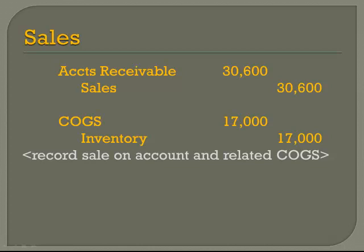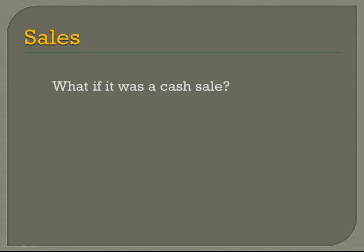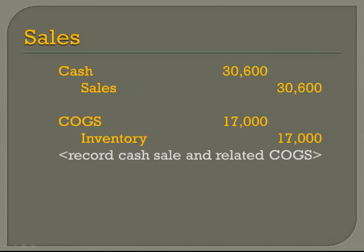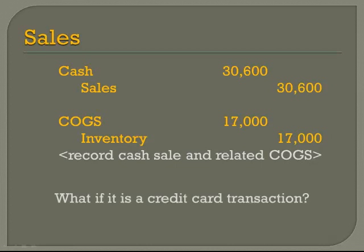What would happen if that sale had been for cash — if they had walked into the store? The only difference would be that we simply change the debit in the first entry to cash rather than to accounts receivable. What would happen if it was a credit card transaction? It would be the exact same entry — just cash and sales. So credit card transactions, for our purposes, we're just going to treat as if it was a cash sale. And we still reduce inventory and increase the expense on cost of goods sold.